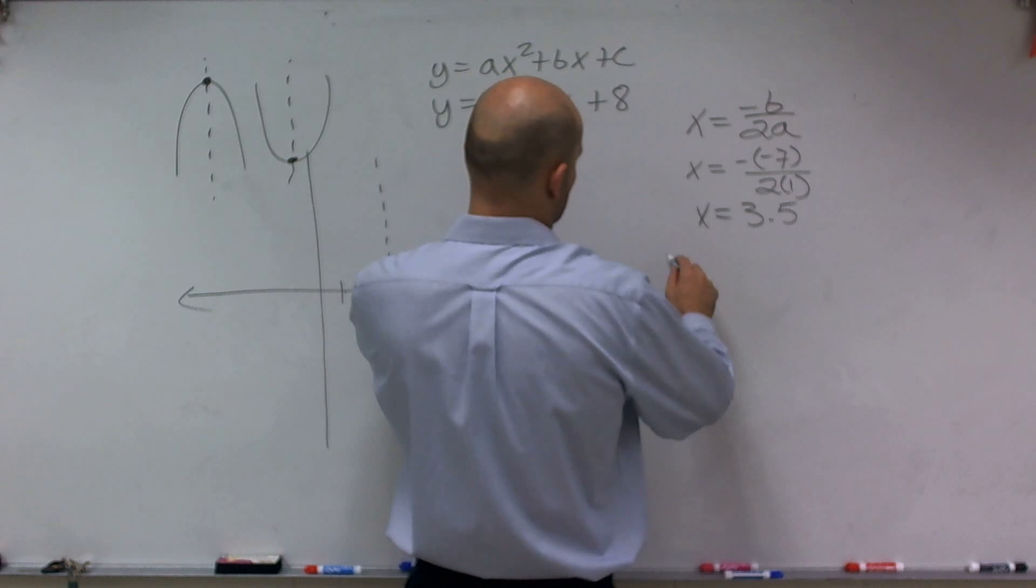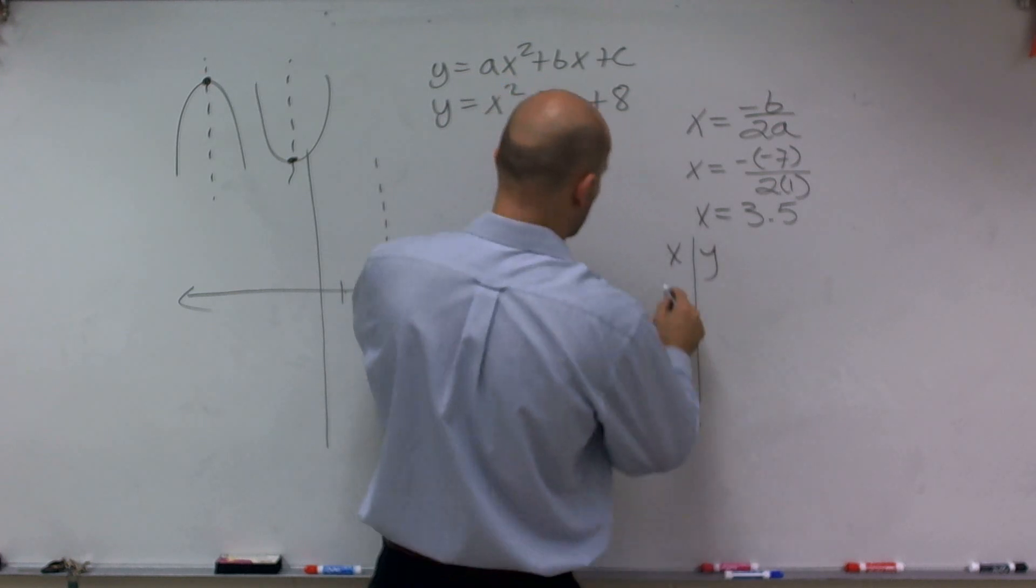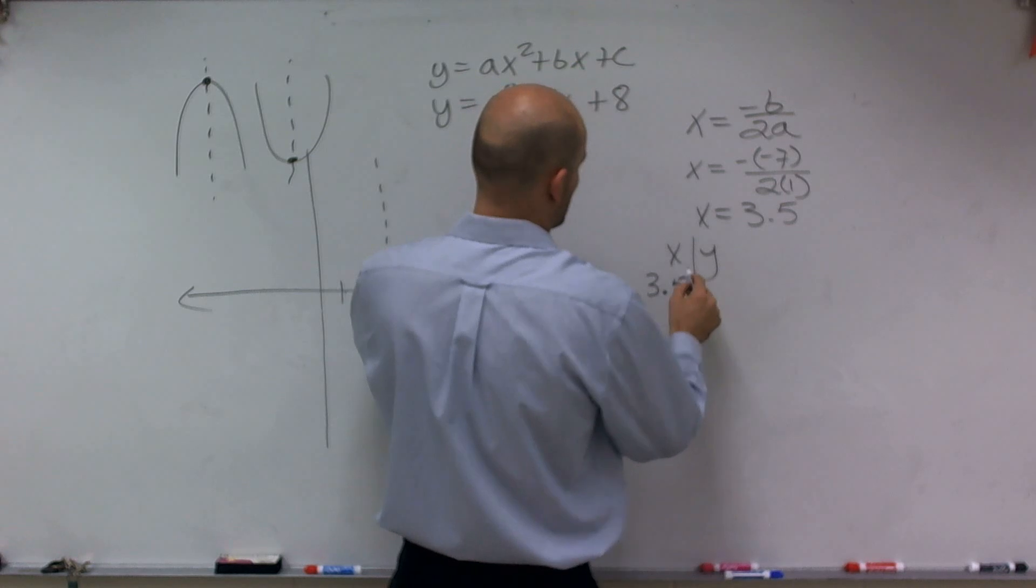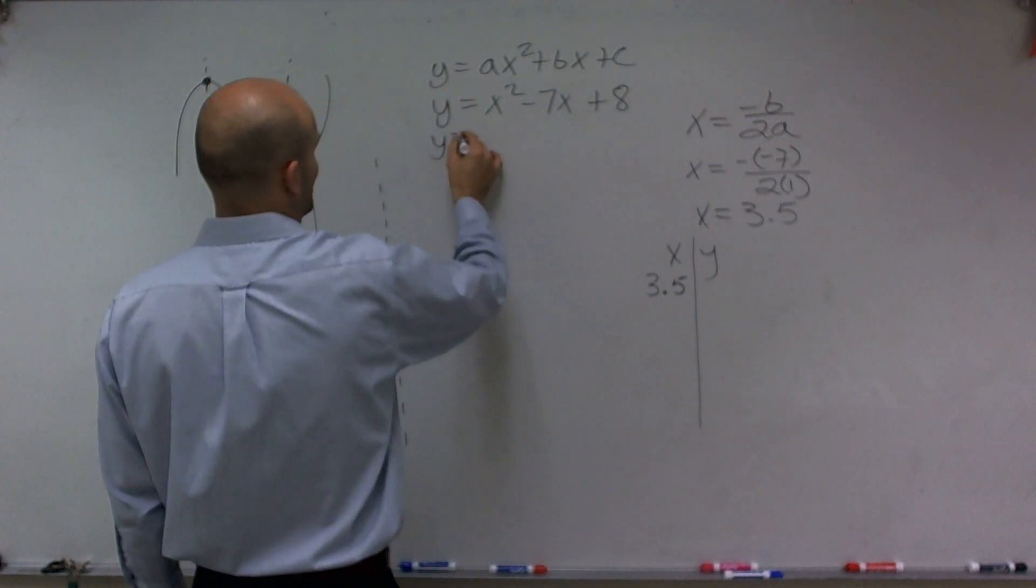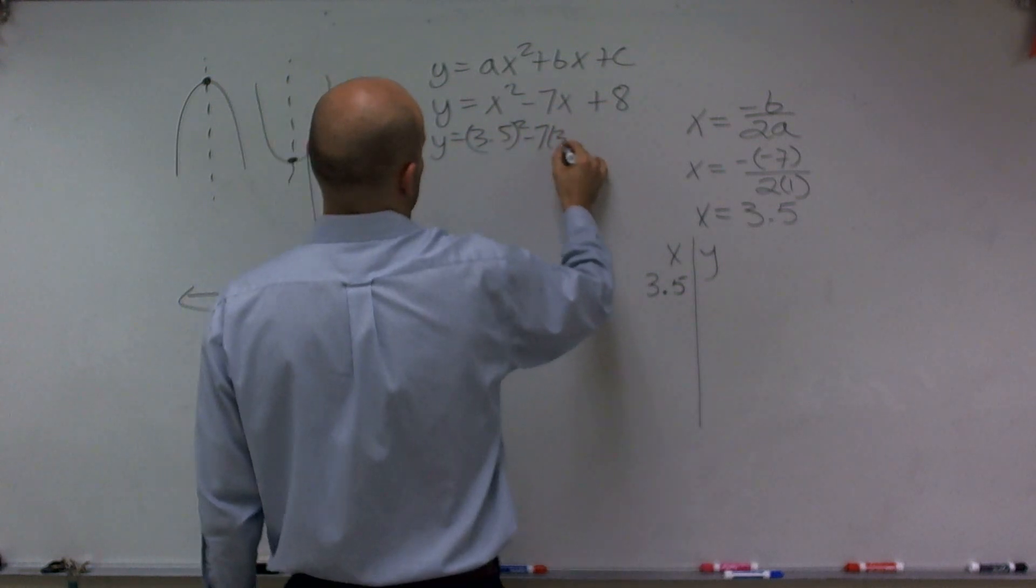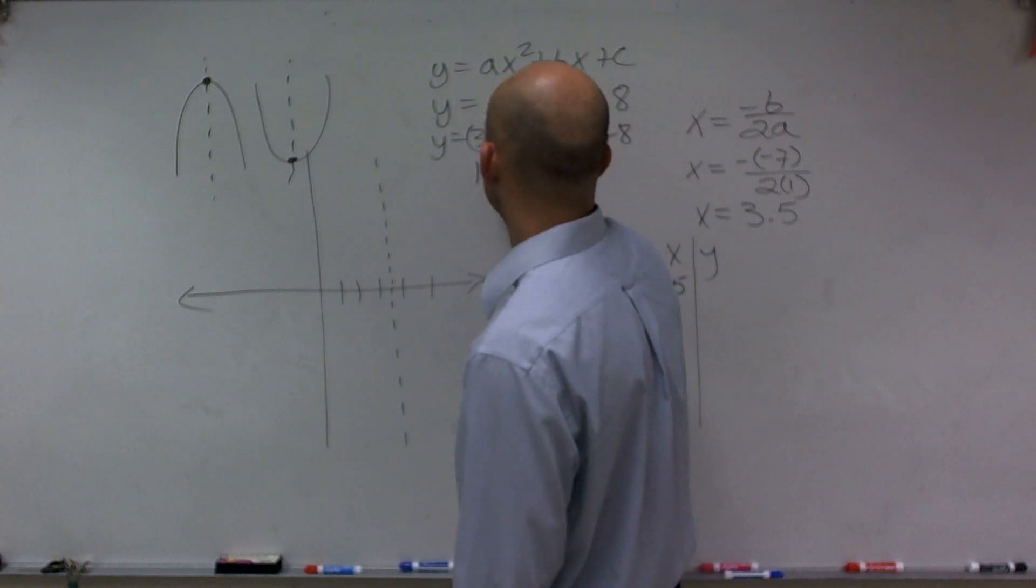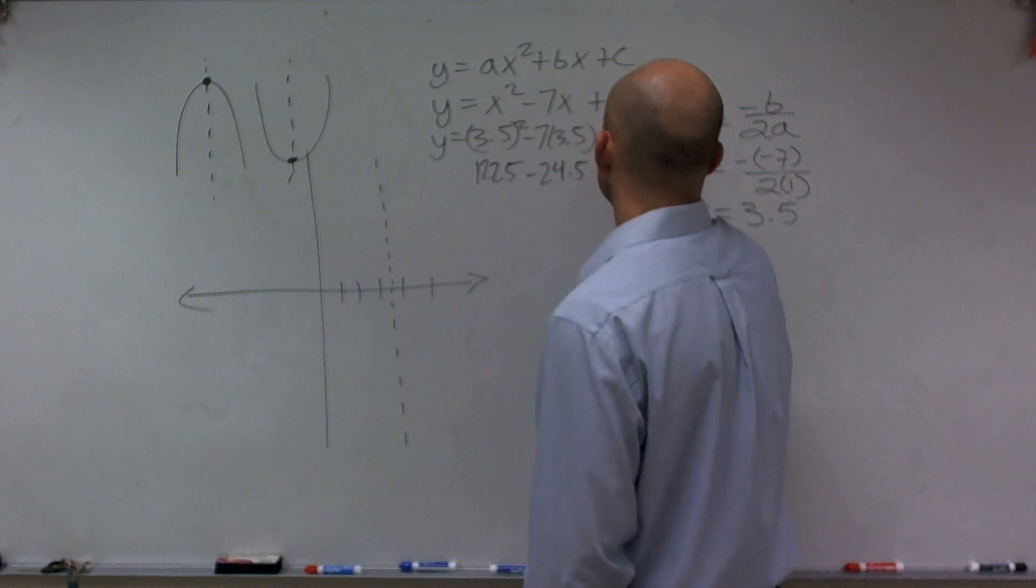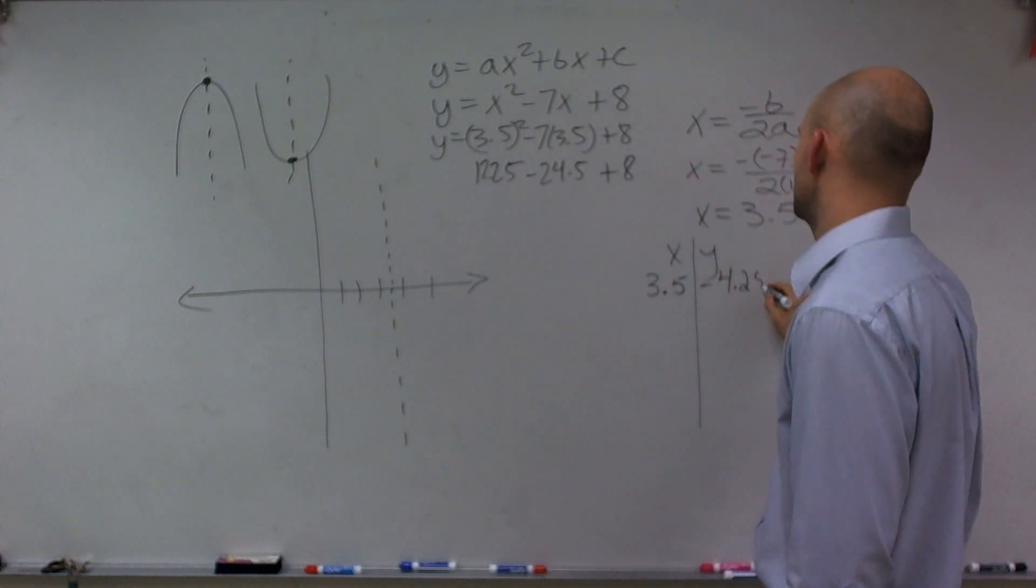So what I have here, when I do my xy table, I'm going to plug in 3.5 for x. So you just do, y equals 3.5 squared minus 7 times 3.5 plus 8. So you get 12.25 minus 24.5 plus 8, and you end up getting negative 4.25.